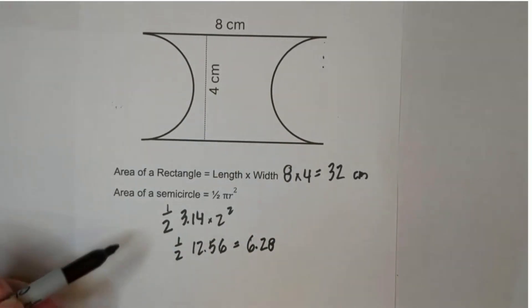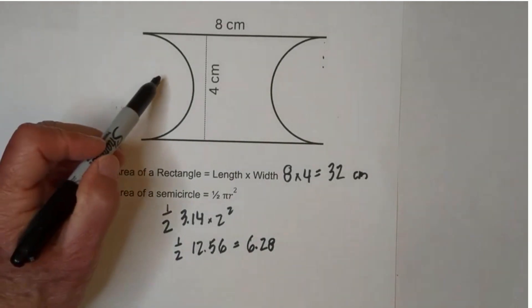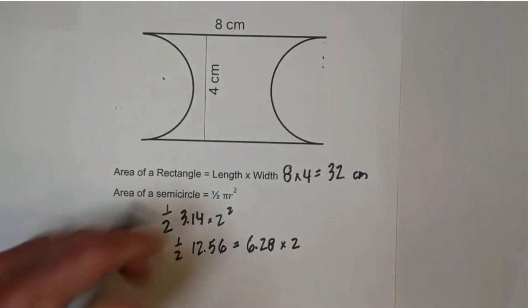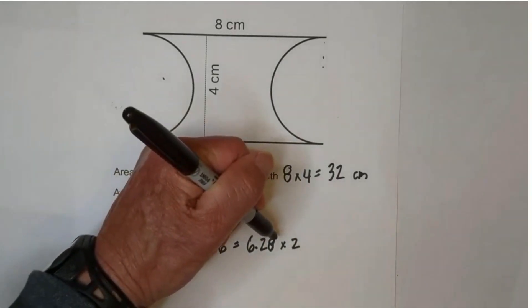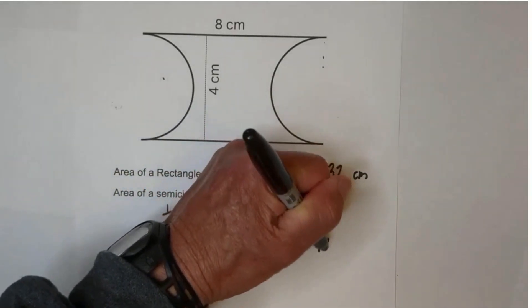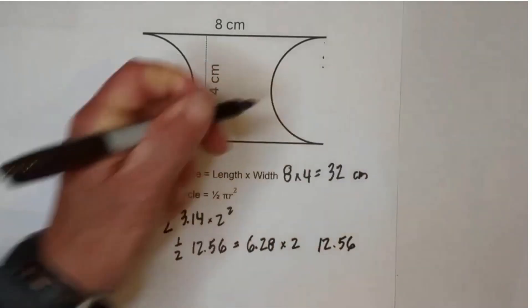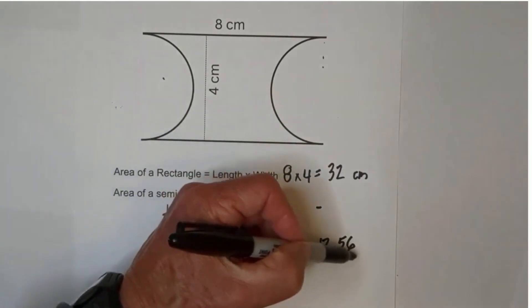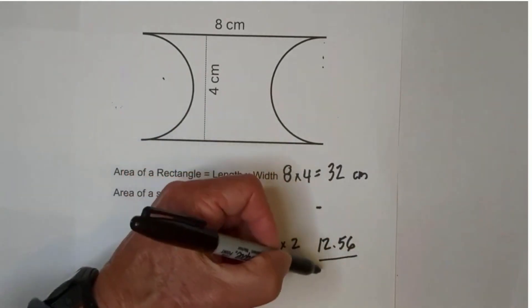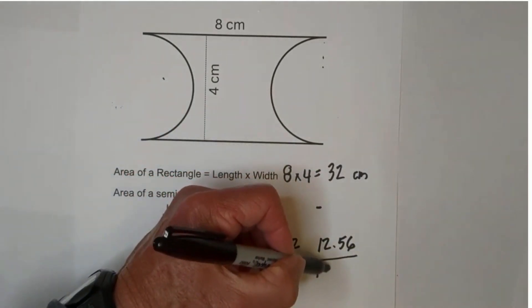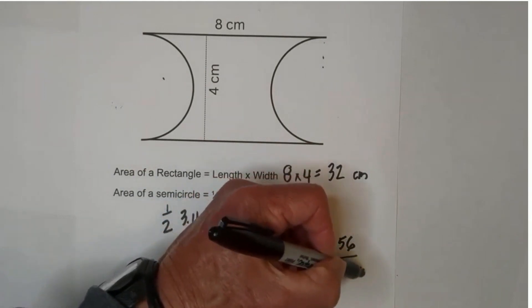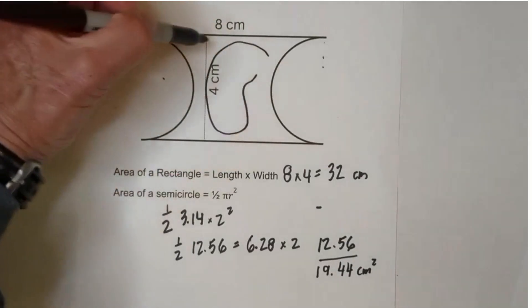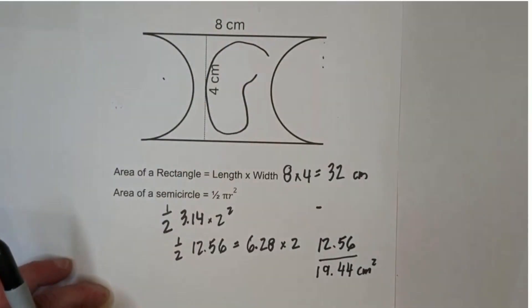But remember we have 2 of these. We have one, two. So we're going to multiply this by 2, and when you multiply 6.28 times 2, you get 12.56. Now all we do is subtract: 32 minus 12.56, and that's going to equal 19.44 centimeters squared, and that is the area of this composite figure.